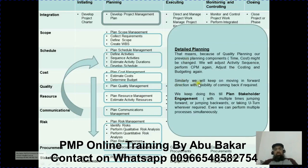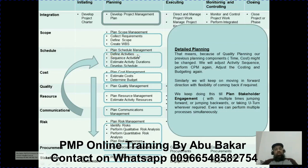We keep moving forward with the flexibility to come back if required, continuing this way until Plan Stakeholder Engagement, with multiple times jumping forward or backward — taking U-turns whenever required. We can also perform multiple processes simultaneously; for example, in the same meeting we may be defining activities, identifying risks, and estimating activity resources all at once.